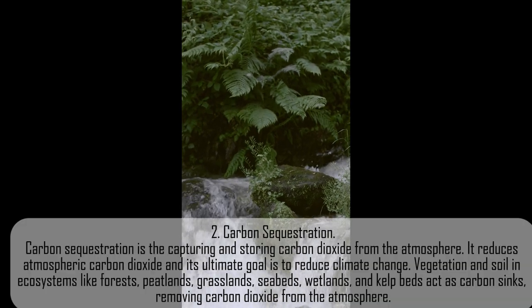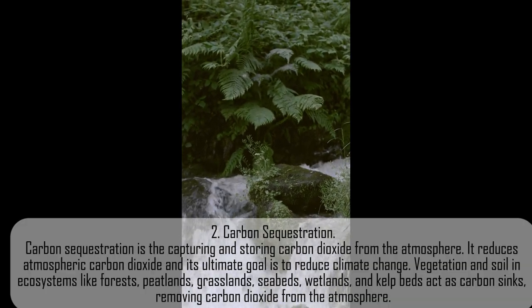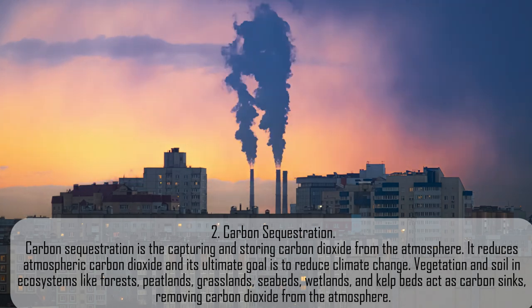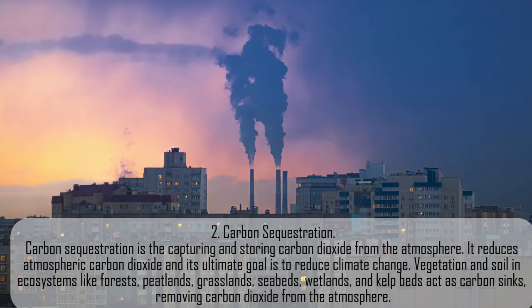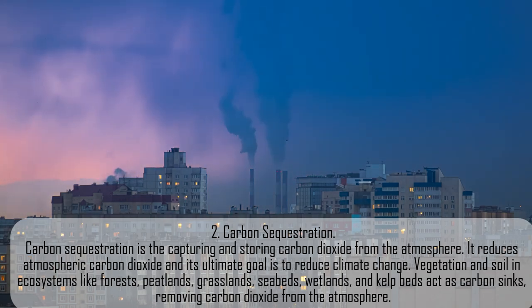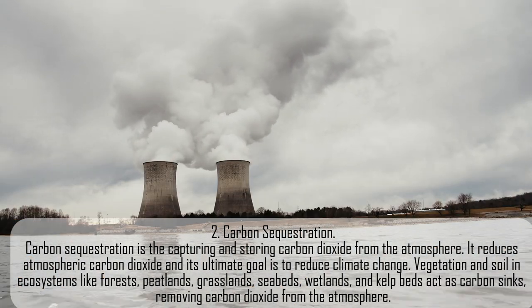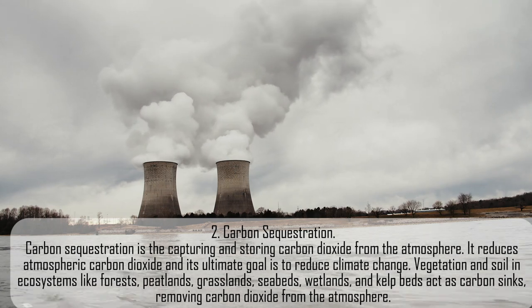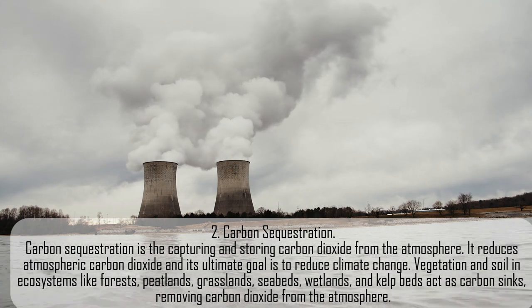Carbon Sequestration is the capturing and storing of carbon dioxide from the atmosphere. It reduces atmospheric carbon dioxide, and its ultimate goal is to reduce climate change. Vegetation and soil in ecosystems like forests, peatlands, grasslands, seabeds, wetlands, and kelp beds act as carbon sinks, removing carbon dioxide from the atmosphere.